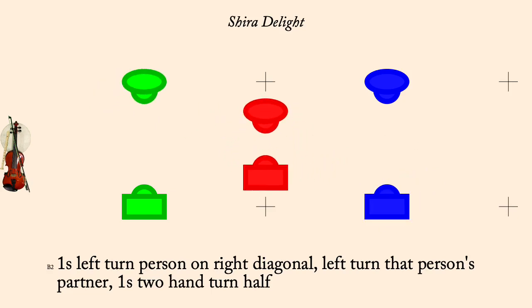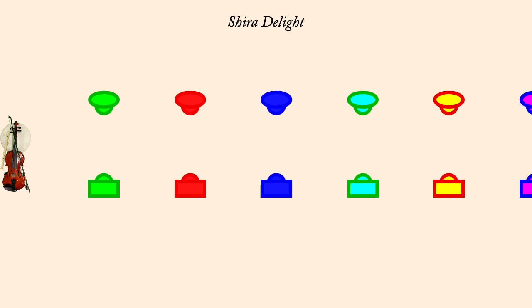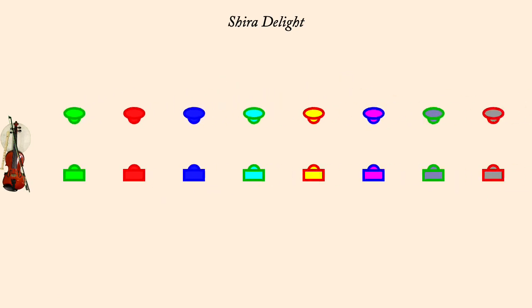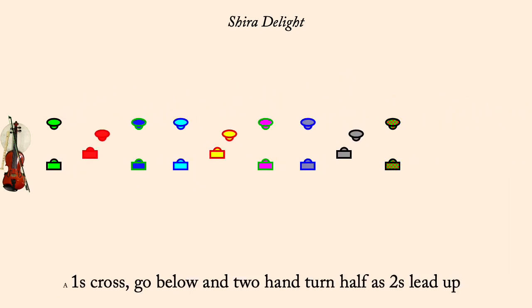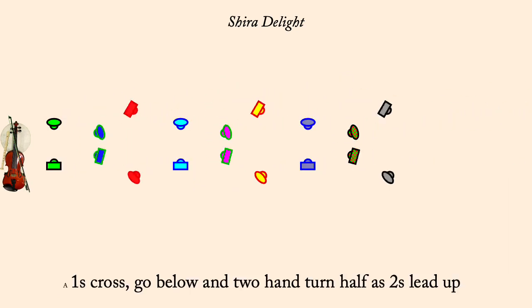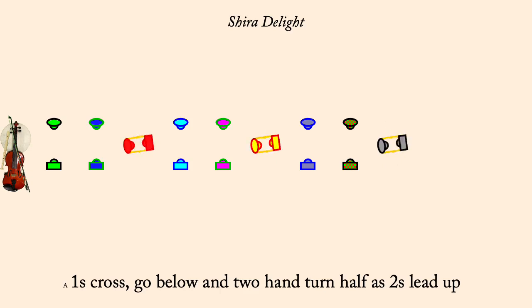Ones cross, go below, and two-hand turn half as twos lead up. Ones cross, go below, and two-hand turn half as threes lead up.